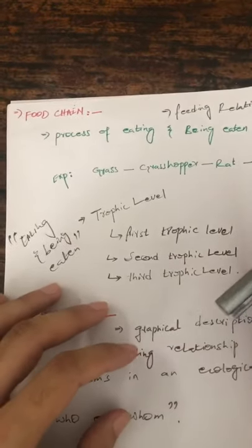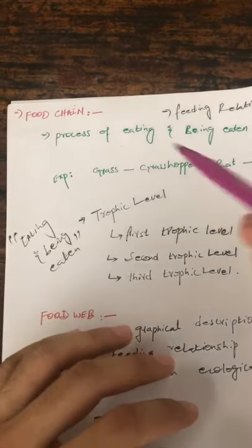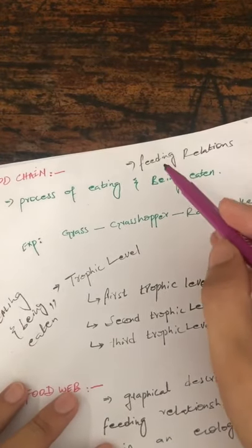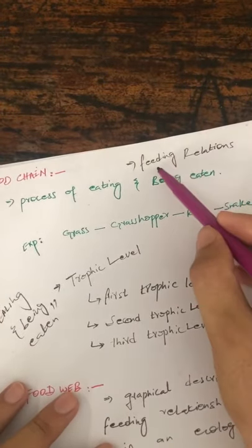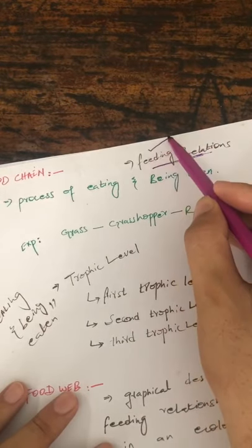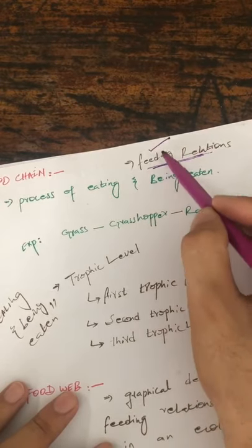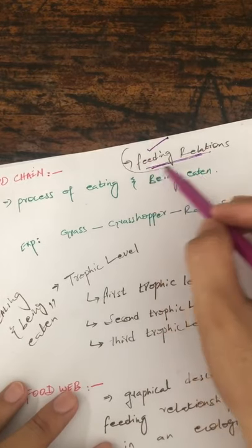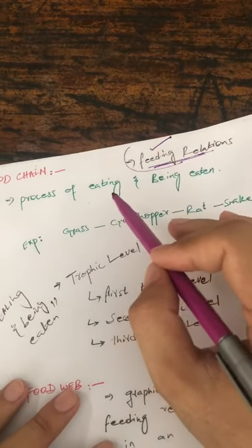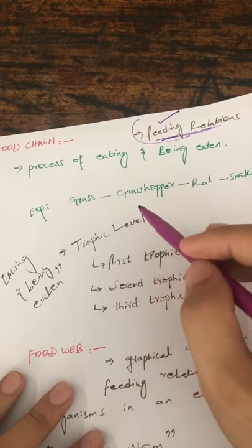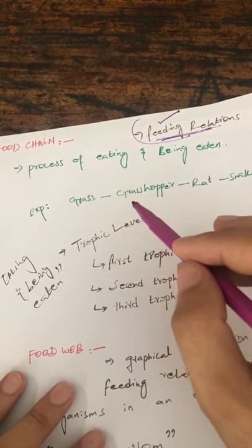Bismillahirrahmanirrahim. Assalamualaikum. Today the topic is the food chain. Basically, in any stable ecosystem, we have relationships. In those relationships, we have a feeding relationship. These are basically the feeding relationships. When we represent this feeding relationship in graphical form, there is a form of food chain or food web.